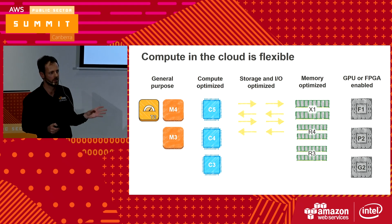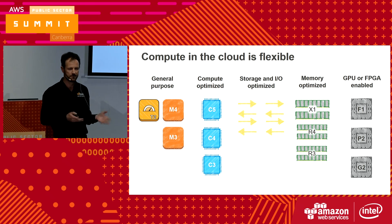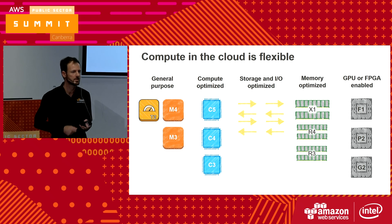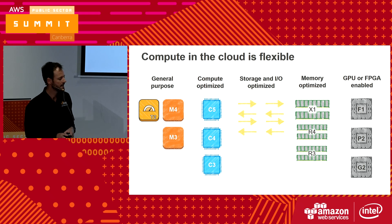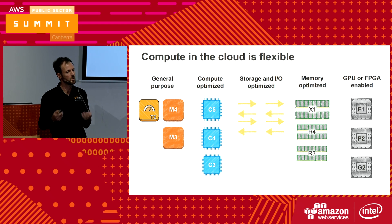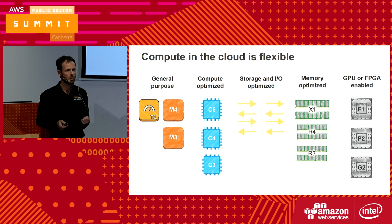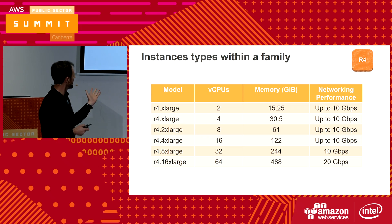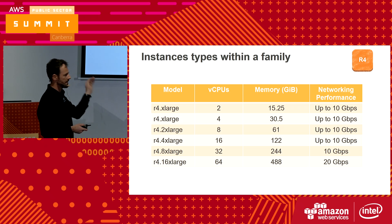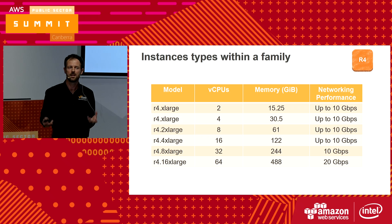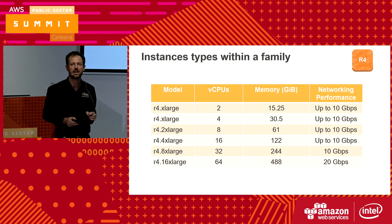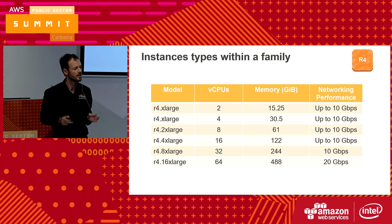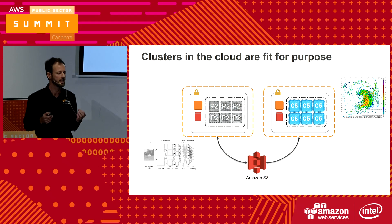We have flexibility in compute. Many of you are familiar with the instance families we offer: general compute, compute-optimized, memory-optimized, I/O. We even have accelerator options for GPU and FPGA. This lets you mix and match the right compute infrastructure for the workload you need to run. For example, within the R4 memory-optimized instance family, at the smaller end we have a couple of CPUs and 16 gigabytes of RAM, but at the top end we're getting half a terabyte of RAM per node — with as many nodes as we want. We also get 20 gigabits per second per node over Ethernet. Taking these things together, we can build fit-for-purpose clusters.